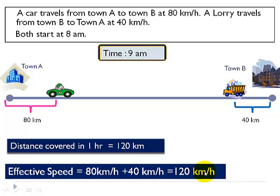Though the car travels at 80 kilometers per hour, in one hour it has covered 80 kilometers, and the lorry has covered 40 kilometers in that same one hour. So from 8 to 9 a.m., the total distance covered between town A and town B is 120 kilometers. That is why we say the effective speed is 120 kilometers per hour.